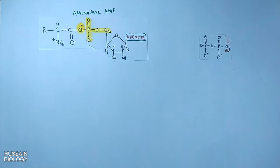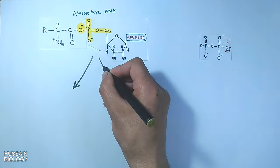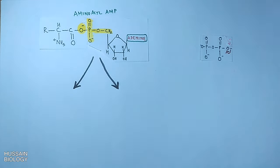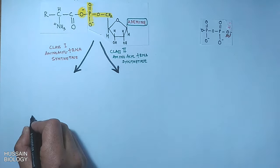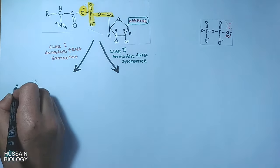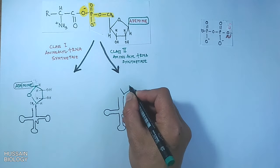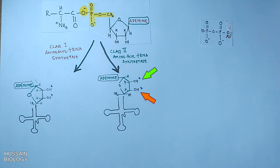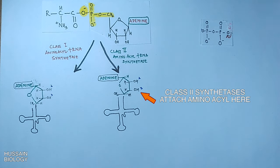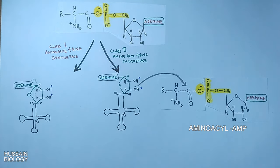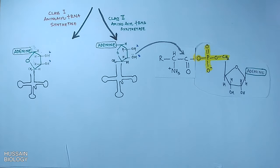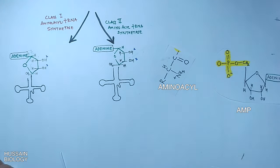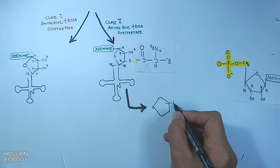The transfer of aminoacyl-AMP onto tRNA is mediated by two classes of aminoacyl tRNA synthetases — Class 1 and Class 2. The aminoacyl-AMP must be attached to the adenine of tRNA; recall the CCA sequence at the three prime end. Adenine has two hydroxyl groups, at positions 2 and 3. Class 2 synthetase catalyzes attachment of the aminoacyl group directly to the 3-OH of adenine: the hydroxyl group reacts with the carboxyl group of aminoacyl-AMP, AMP leaves, and aminoacyl tRNA is generated.